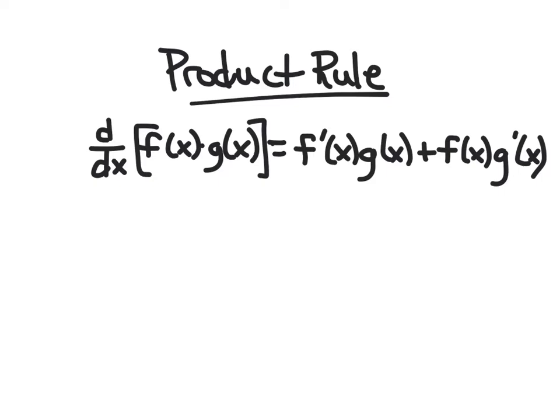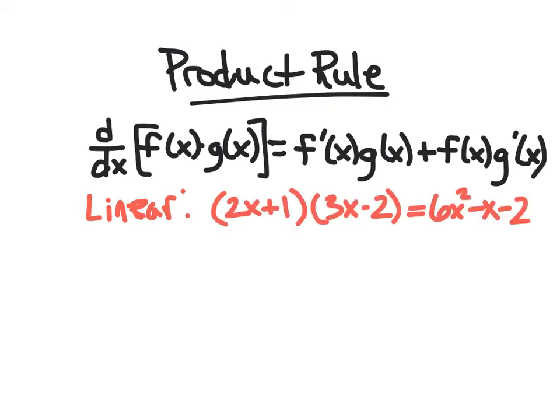Let's see an example with linear functions to see how this actually works and justify that it's true. We can actually just multiply it out and use the power rule as well. So we have (2x + 1)(3x − 2) = 6x² + 3x − 4x − 2, which is 6x² − x − 2. From the power rule, the derivative is 12x − 1.